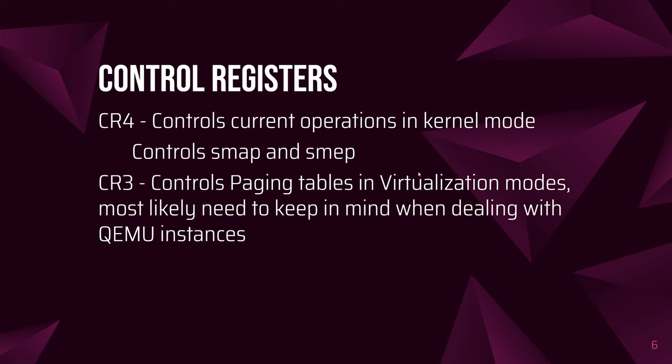Let's talk about the control registers. The main ones are CR4 and CR3. CR4 controls current operations in kernel mode — it's what controls the SMEP and SMAP protections, and it can be written live. So if you're able to get a ROP chain going, you can actually turn off SMEP and SMAP. Sometimes that's useful, but sometimes it's harder to do than finding a different way to get control. CR3 controls paging tables and virtualization modes. This mostly comes into play with QEMU or other virtualization methods. Sometimes you'll need to specifically reset CR3 so you're able to jump back to userspace once your exploit is done.